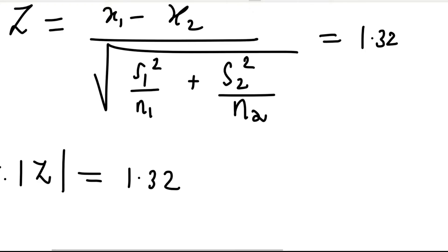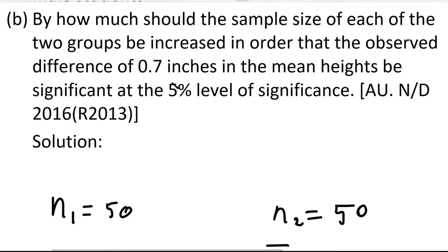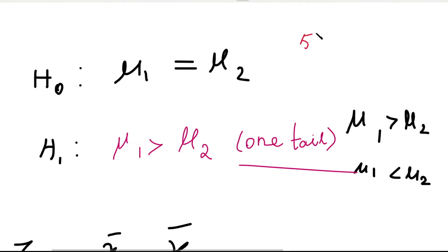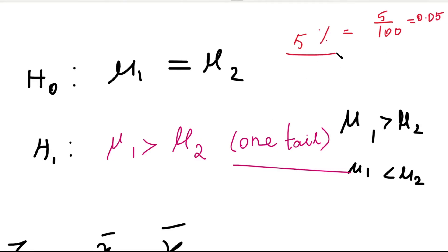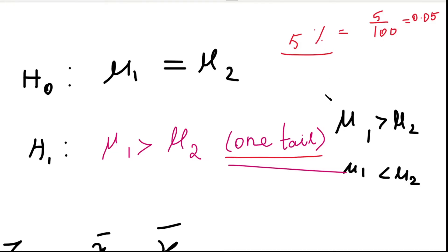Next, we find the table value. Since the sample size is large, degrees of freedom is infinity. The level of significance is 5%, which is 0.05. For a one-tailed test at 5% significance, we use 0.05 in the table. For a two-tailed test at 5%, the effective alpha would be 0.10.